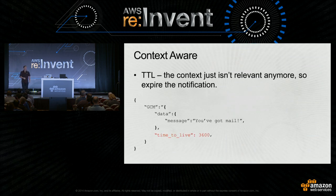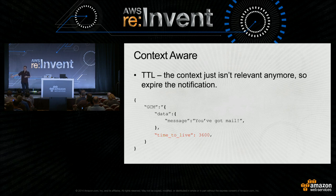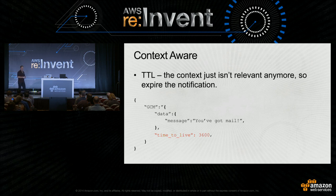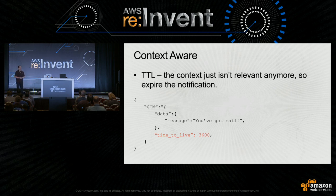Context-aware push is also important. Often our push notifications aren't relevant anymore. If it was a location-based push and I don't see it until six hours later, it's irrelevant. Here's an example of a quick GCM message that enables TTL — 3,600 seconds is probably a little short, but it's an example of how expiration can be done.